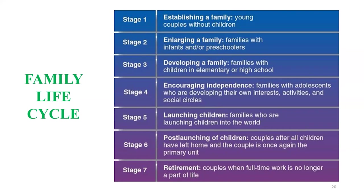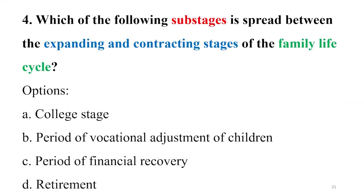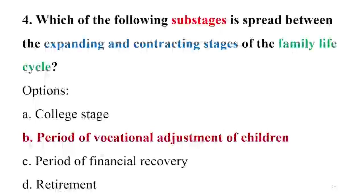Stage 5 is launching children, where the young ones have chosen their career path — perhaps becoming an engineer or doctor. Stage 6 is post-launching children, where children have left home to achieve their vocational goals. Stage 7 is retirement, when the couple is left alone — also called the empty nest. The sub-stage between the expanding and contracting stages is option B: period of vocational adjustment of children.